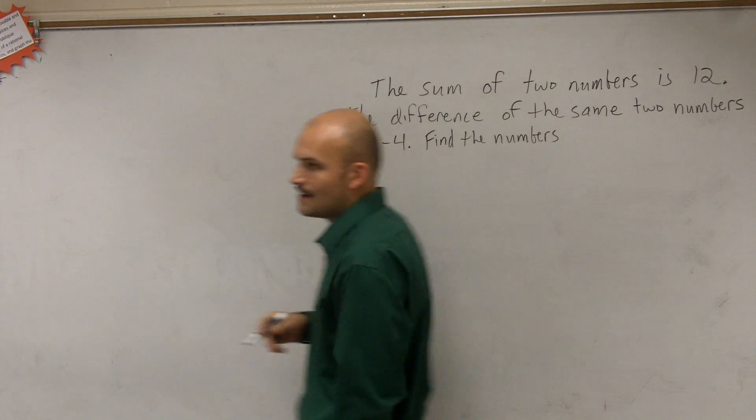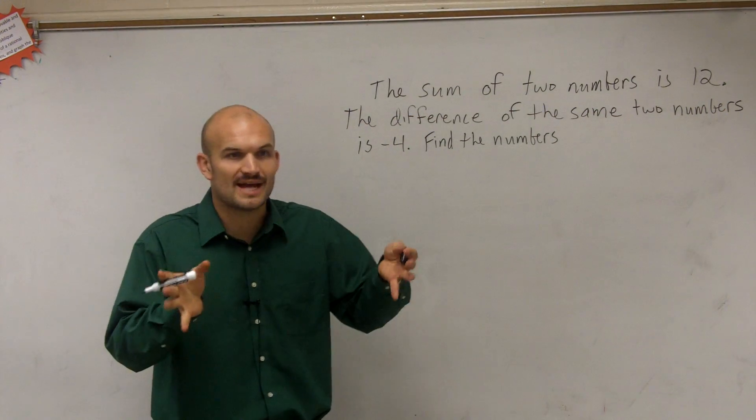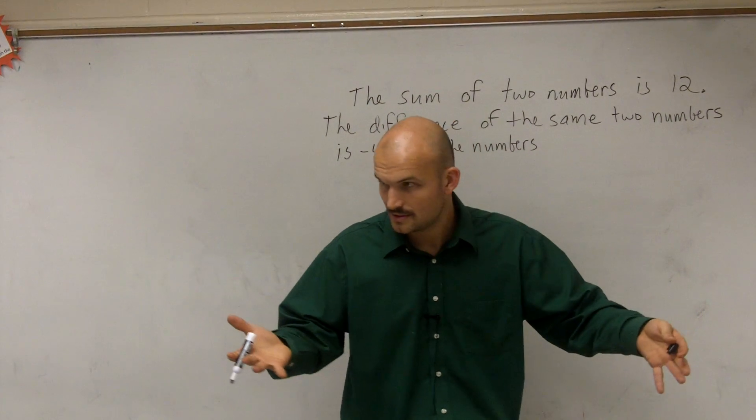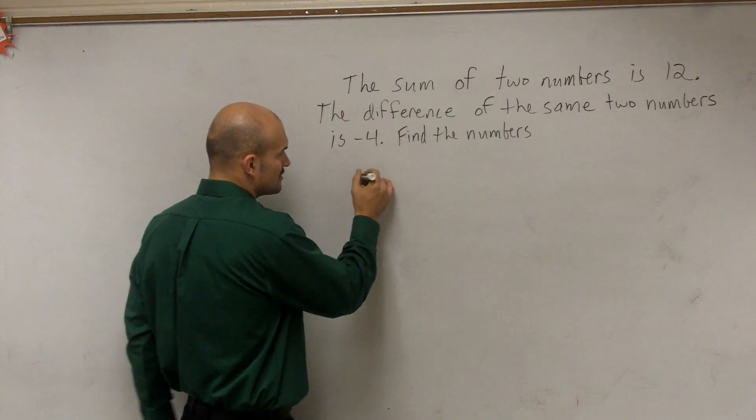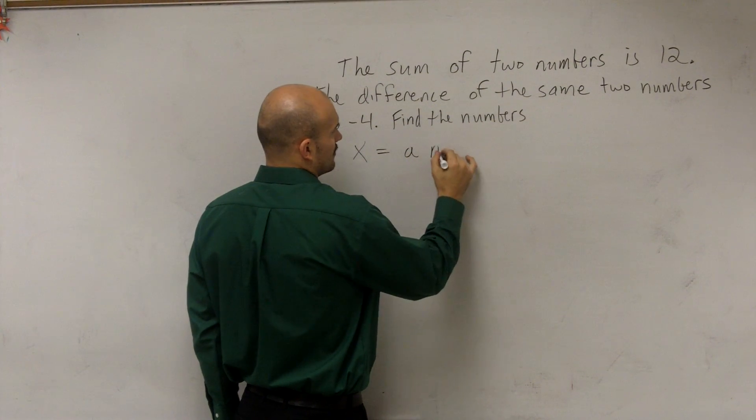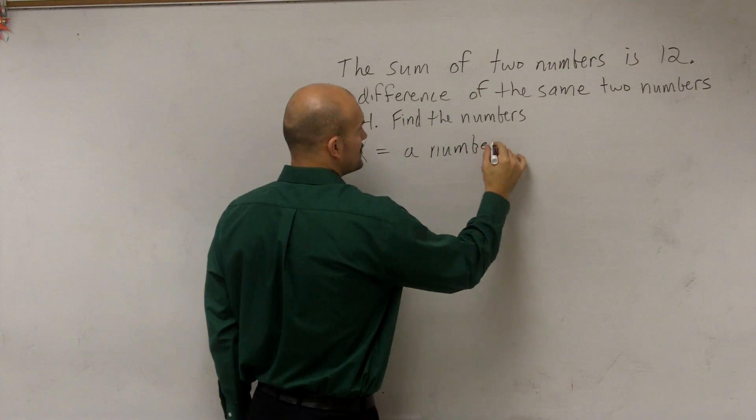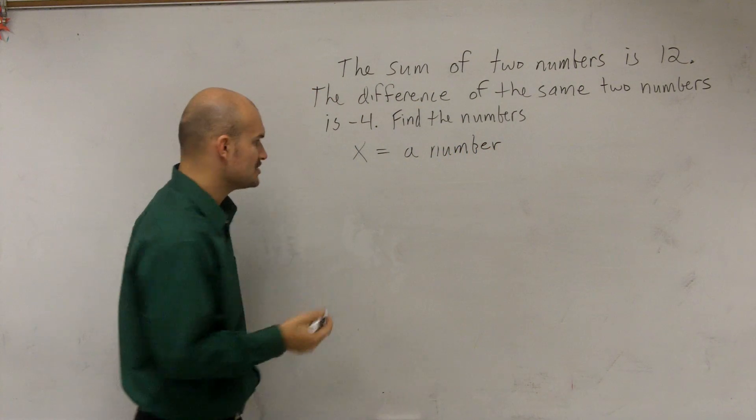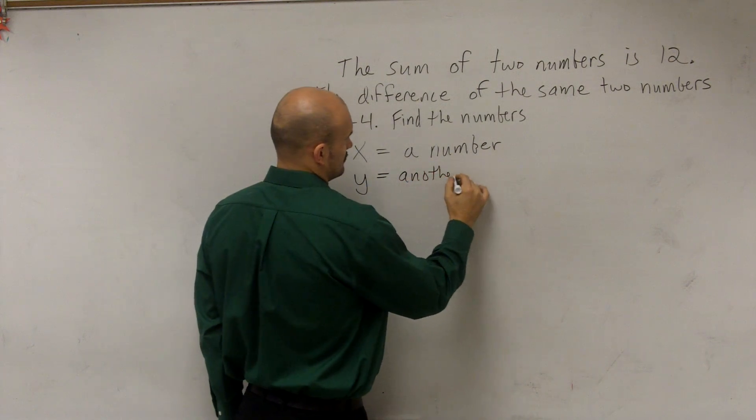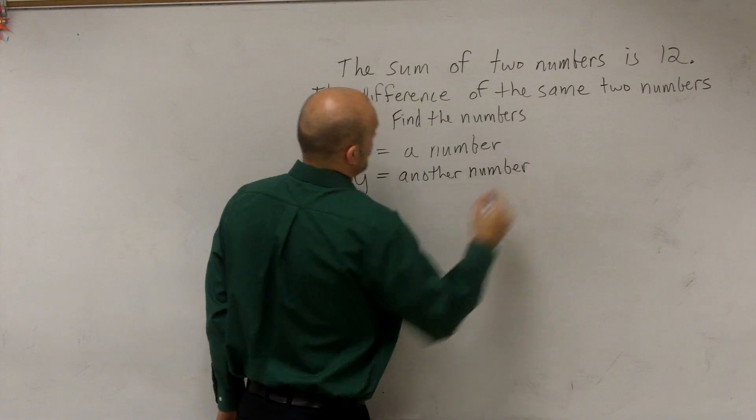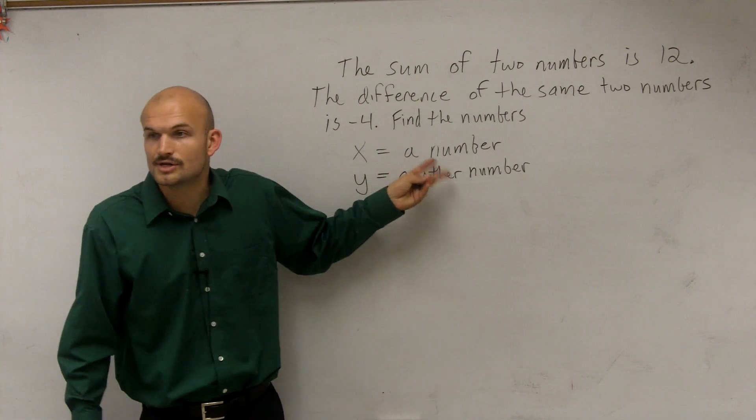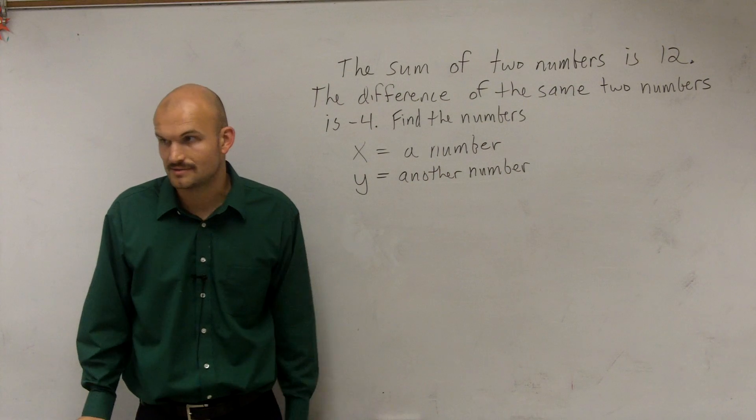Two numbers. So what I'm going to immediately do is set variables, right? Because variables are what you don't know. So I'm going to say x equals a number. Let's do y, another number. Do we know the values of x and y? No. But do we understand that these are unknowns, and that's what we're trying to find?